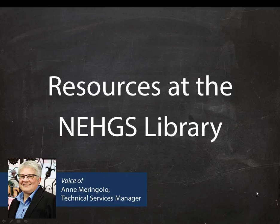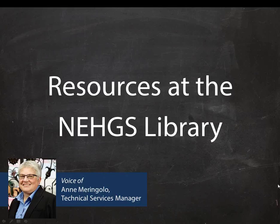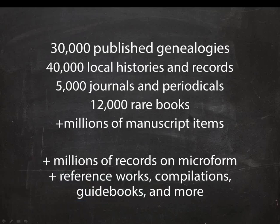The New England Historic Genealogical Society Library at our headquarters in Boston offers a wealth of resources for genealogical and historical research. The library contains millions of unpublished and published items, and the library catalog is the gateway to those resources. Let's start with a look at the scope and diversity of materials available.